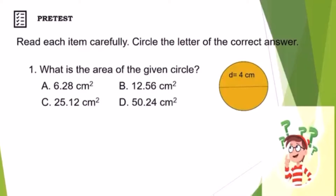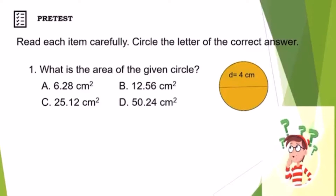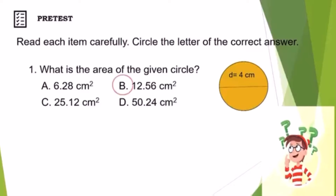For number 1, what is the area of the given circle? Is it A. 6 and 2800 square centimeters? B. 12 and 5600 square centimeters? C. 25 and 12 hundredths square centimeters? Or D. 50 and 24 hundredths square centimeters? The correct answer is letter B.